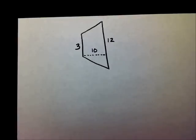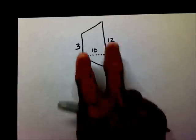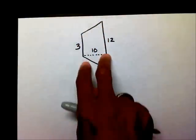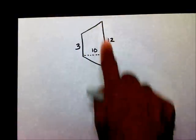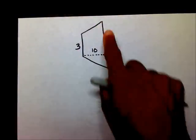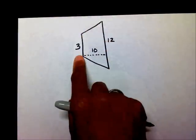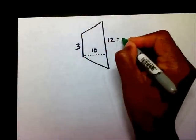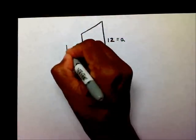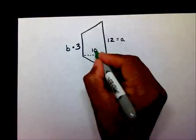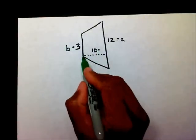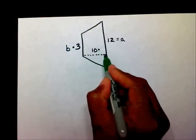Alright. Well, first, let's find our a, b, and h. Well, I have two parallel lines here. So, I know this is going to be my a and my b. This 10 right here, which goes from one parallel line down to the other parallel line, is going to be my h.